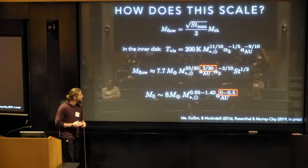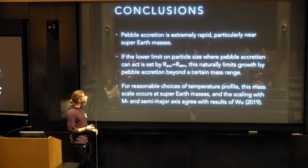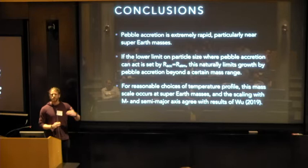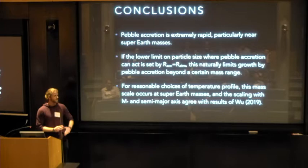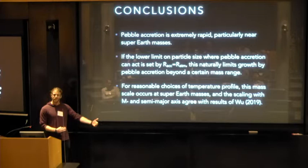So, in conclusion. Pebble accretion is very rapid, especially in your super-Earth mass scales. But if you assume that pebble accretion is shut off on the lower end by the scale at which your impact parameter for accretion is equal to the size of your atmosphere, you would naturally find that growth is limited at exactly the super-Earth mass range. And this is now going to be dependent on your temperature profile, since it's dependent on your thermal mass. And if you put in a reasonable choice for temperature profile in the inner disk, you end up with the right scaling with solar mass and semi-major axis. Thank you.